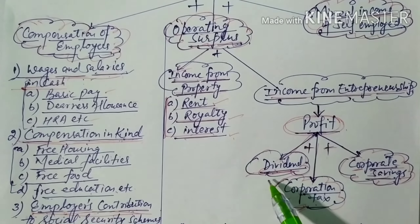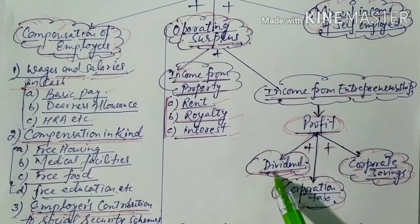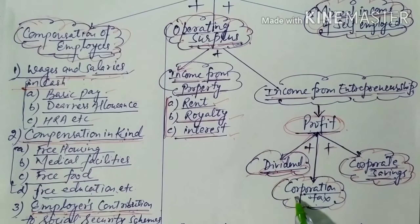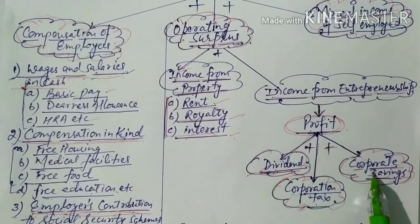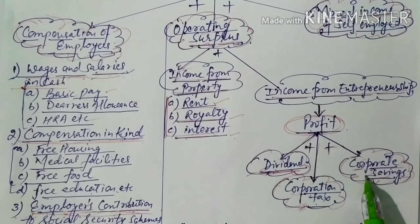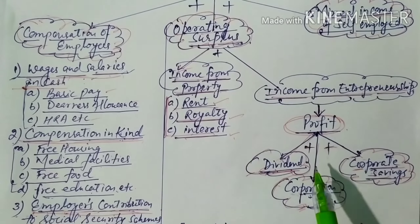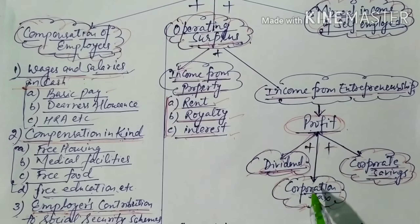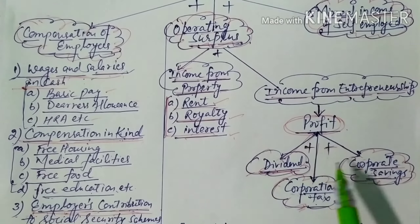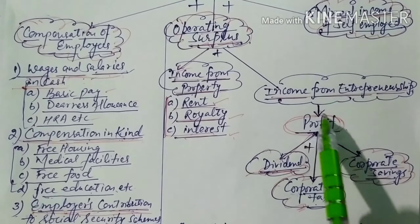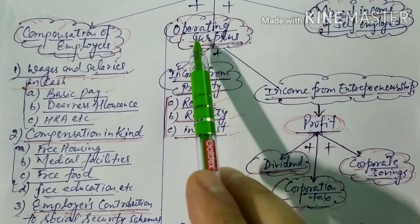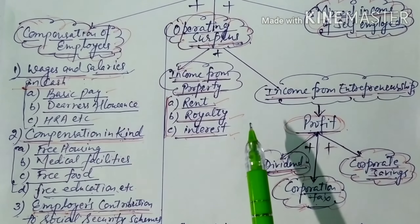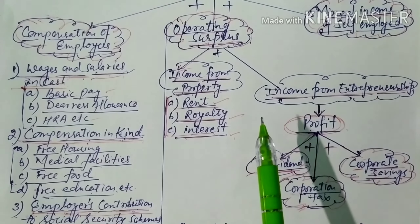The second part is corporation tax — the tax imposed on profits of the company. The third part is corporate savings, meaning retained earnings or undistributed profit for the corporate sector. Adding dividend plus corporation tax plus corporate savings gives us profit. So the second component is operating surplus.